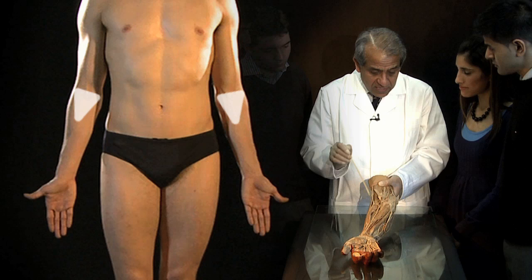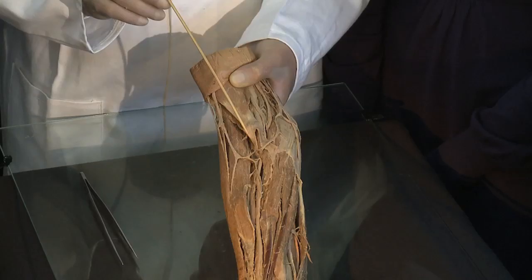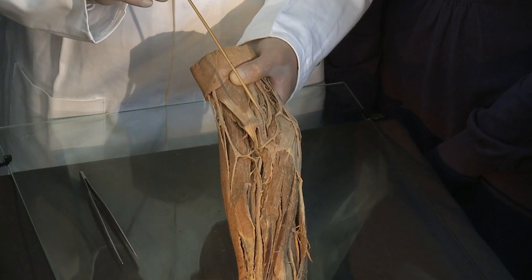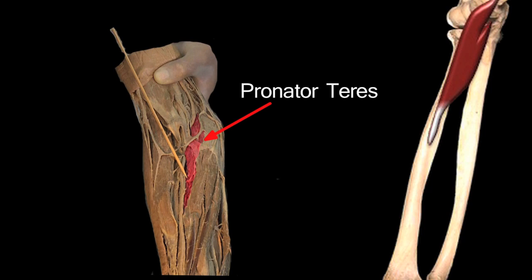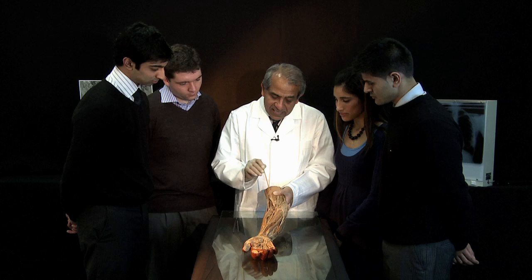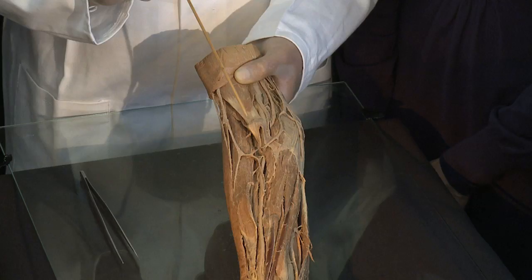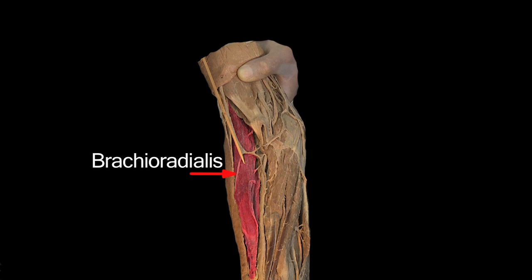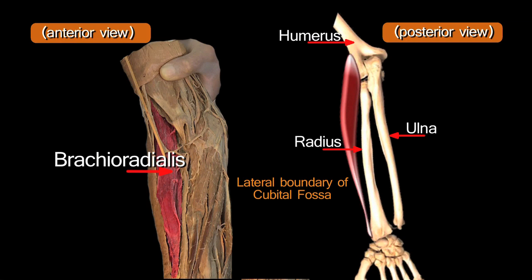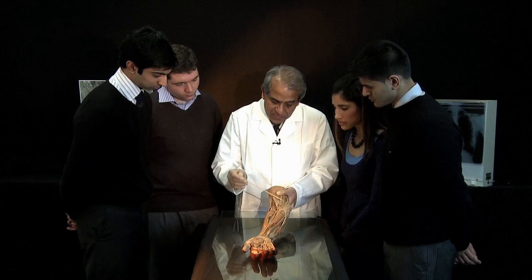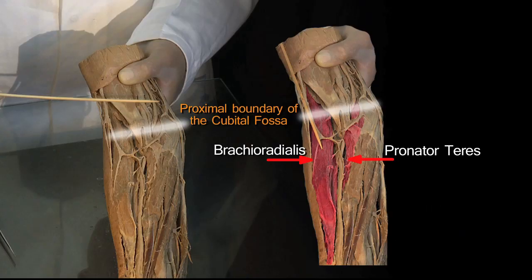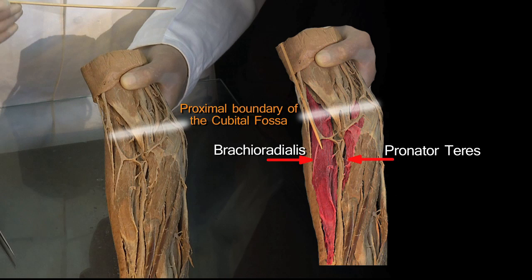Let's begin by defining the boundaries of the cubital fossa. The medial boundary is pronator teres, the most lateral of the common flexor muscles. The lateral boundary is the brachioradialis, which runs from the lateral aspect of the humerus down the lateral aspect of the forearm. The proximal boundary of this triangular space is an imaginary line between the medial and lateral epicondyles. That is the outline of the cubital fossa.